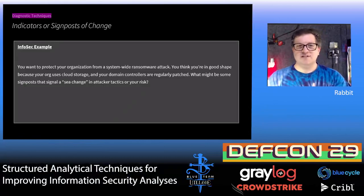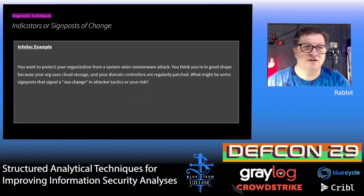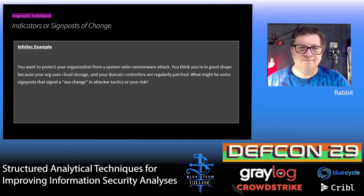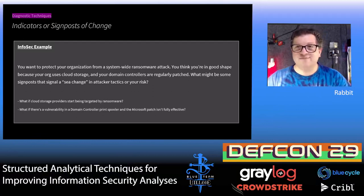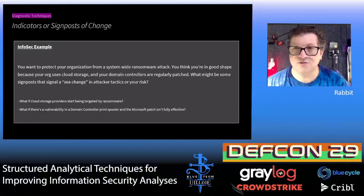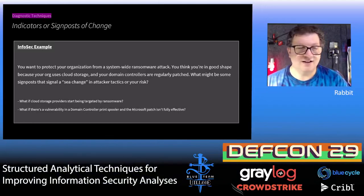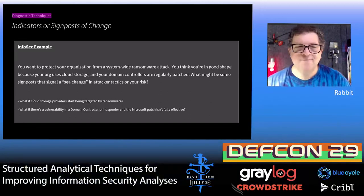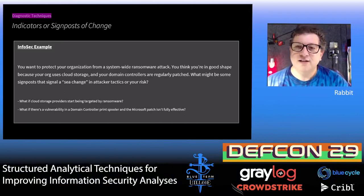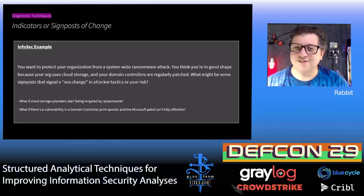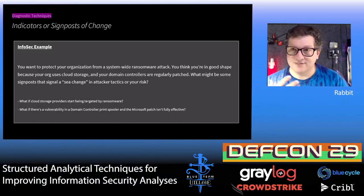An information security example: you want to protect your organization from a system-wide ransomware attack. You think you're in good shape because your org uses cloud storage and your domain controllers are regularly patched. What might be some signposts that this assessment might be changing and you need to rethink that risk? Well, if ransomware attackers start specifically attacking cloud storage providers a lot more, that's a fundamental change to their tactics and TTPs. Or what if there's a vulnerability in a domain controller — say in a print spooler where Microsoft releases a patch that doesn't fully fix the issue? Knowing that exists, you would have to consider whether your conclusion that you're protected will hold up over the next one, six, 24, or 48 hours.